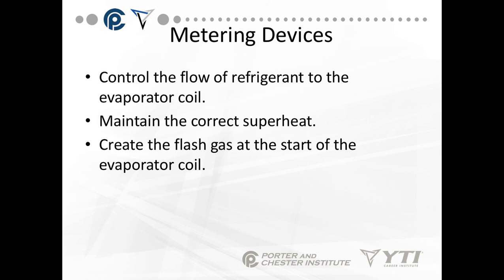The metering device has basically one purpose, and that's to control the flow of refrigerant to the evaporator coil. It's supposed to maintain the correct superheat, and it creates the flash gas at the start of the evaporator coil. It's a point of pressure drop. We come into the metering device with high-pressure liquid. We leave with low-pressure liquid mixed with some vapor, which is called flash gas. Think of it as the spray nozzle on a garden hose.